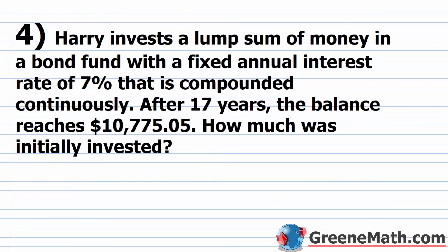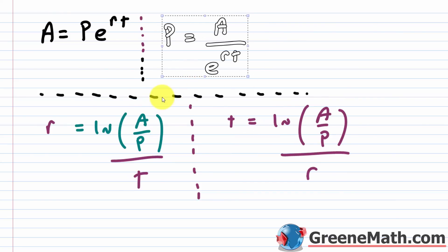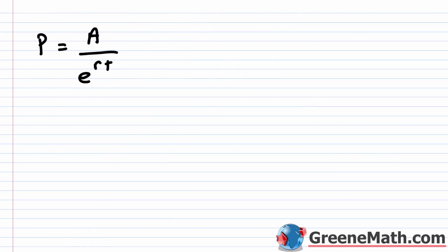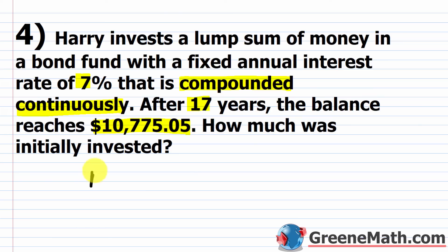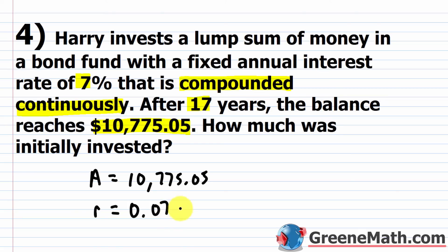Let's take a look at problem four. Harry invests a lump sum of money in a bond fund with a fixed annual interest rate of 7% compounded continuously. After 17 years, the balance reaches $10,775.05. How much was initially invested? We're solving for the principal again, so we use P equals A divided by e^(rt). A equals $10,775.05, r equals 0.07, and t equals 17.